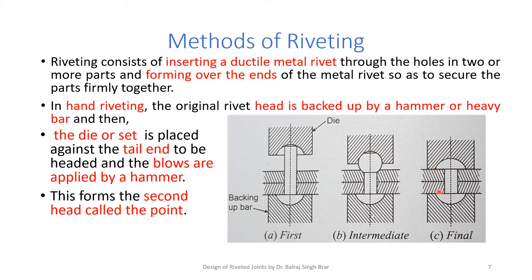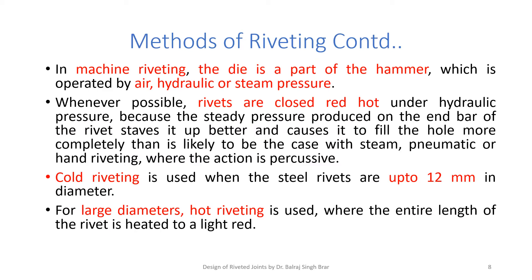In this way, the two plates have been riveted by a rivet and the joint is complete. In machine riveting, the die is part of the hammer, which is operated by air, hydraulic, or steam pressure. During machine riveting, the rivets are usually closed red hot to make them stay better, and it also causes the rivets to fill the hole more completely than in the case of hand riveting, where percussive actions are used. Cold riveting is used when the steel rivets are up to 12 mm in diameter. For large diameters, hot riveting is used.